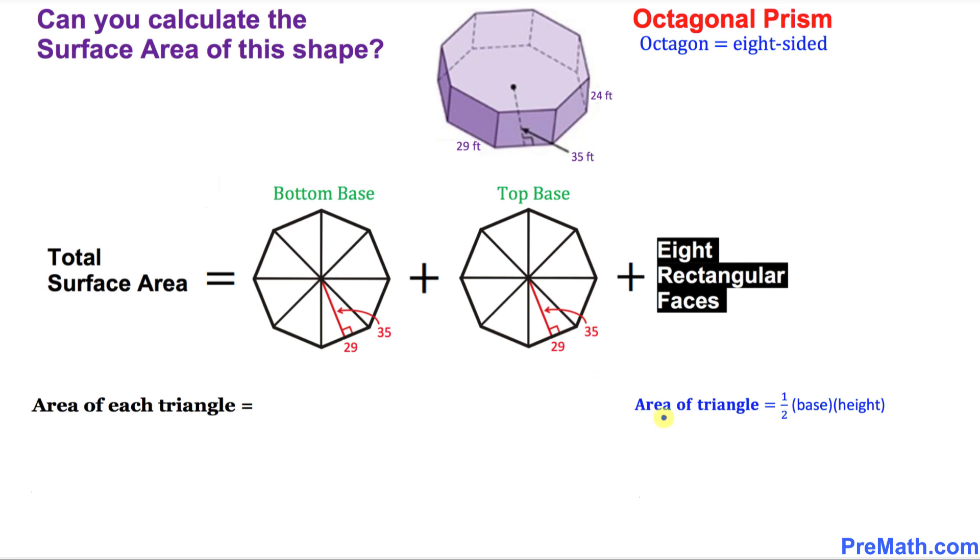We know the area of the triangle is half times base times height. We have been given the base and the height. Let's go ahead and fill in the blanks. A half times 29 times 35. Let's simplify this. If you multiply and divide, that is going to give you 507.5. So that means each of these triangles has an area of 507.5.